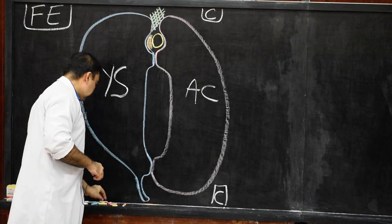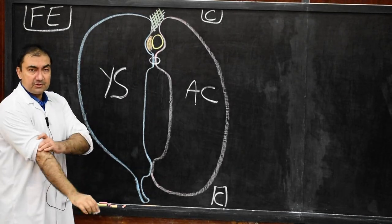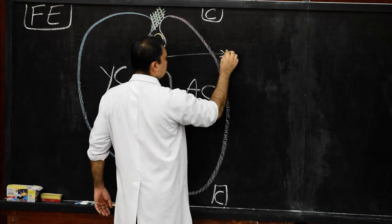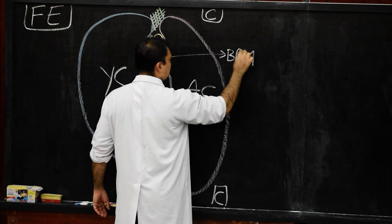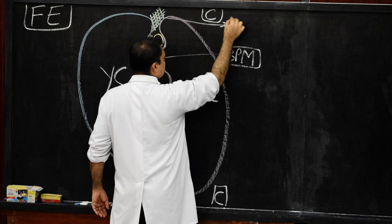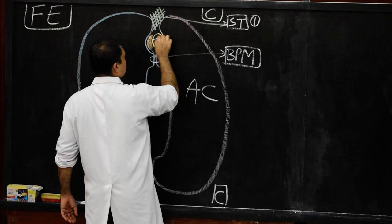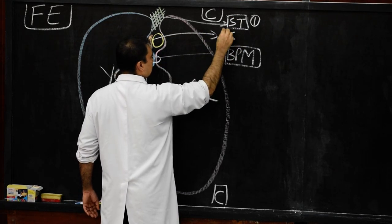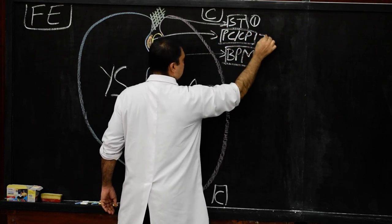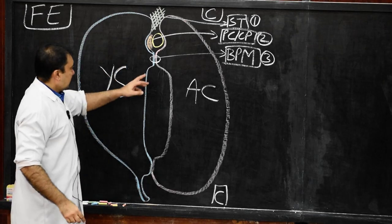Next, show a ring-like structure marking the buccopharyngeal membrane. Mark structure number one as septum transversum, structure number two as pericardial cavity with the cardiogenic plate, and structure number three as buccopharyngeal membrane — that is, the pre-caudal plate.